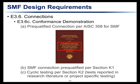It goes on to tell you how you can demonstrate that you're conforming to those requirements. The most popular way, which we're going to discuss today, is the use of one of the pre-qualified connections in the AISC 358 document — called the Pre-qualified Connections for Special and Intermediate Steel Moment Frames for Seismic Applications. Because of the length of the name, we'll refer to it as either the Pre-qualified Connections document or simply AISC 358.